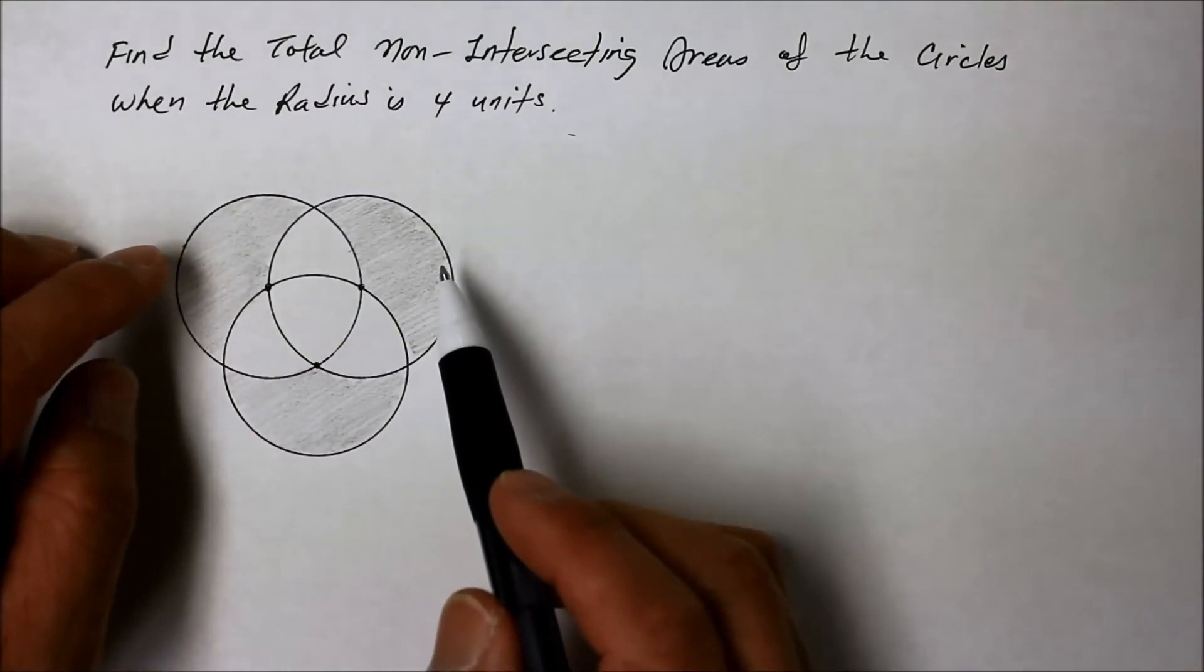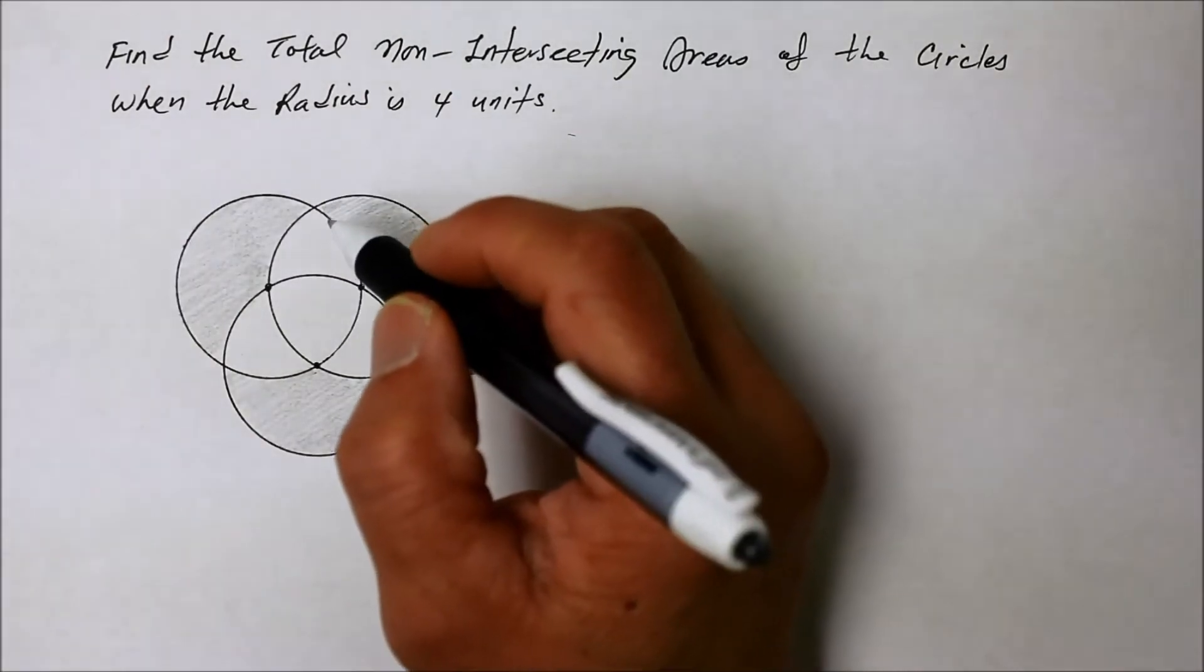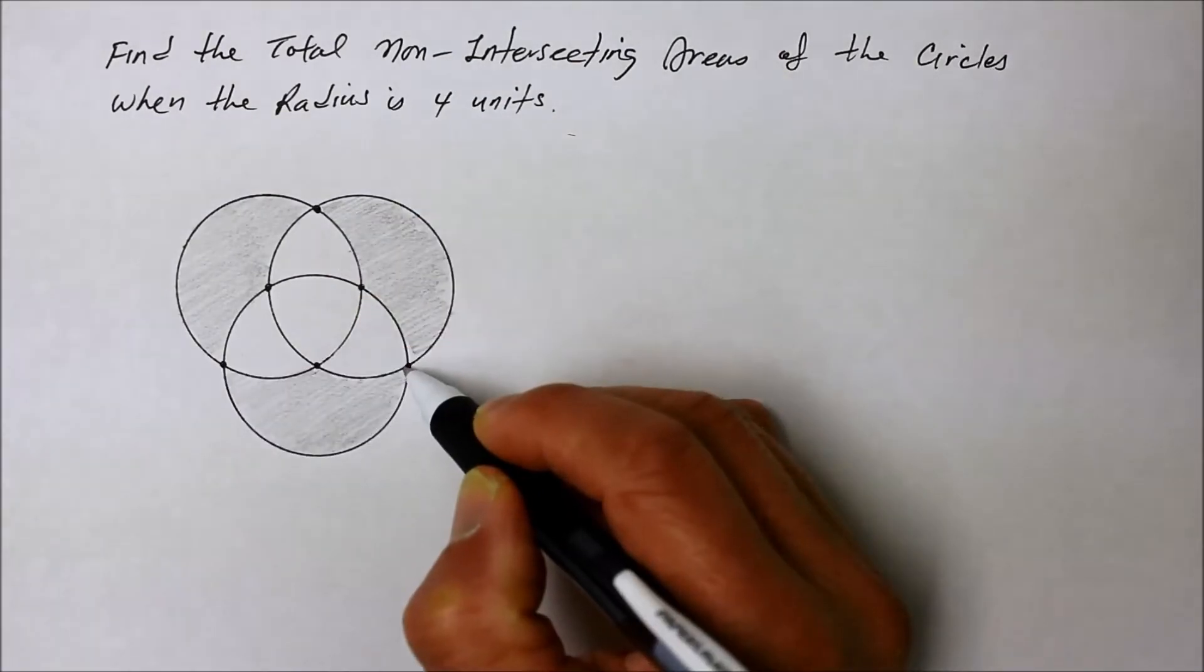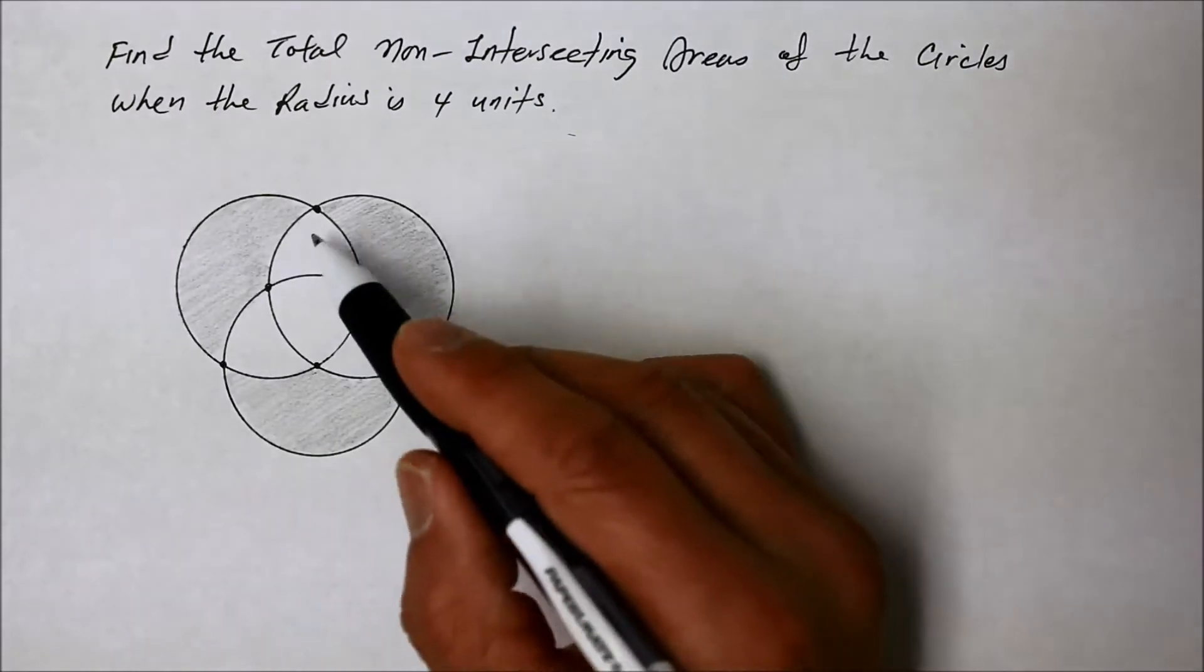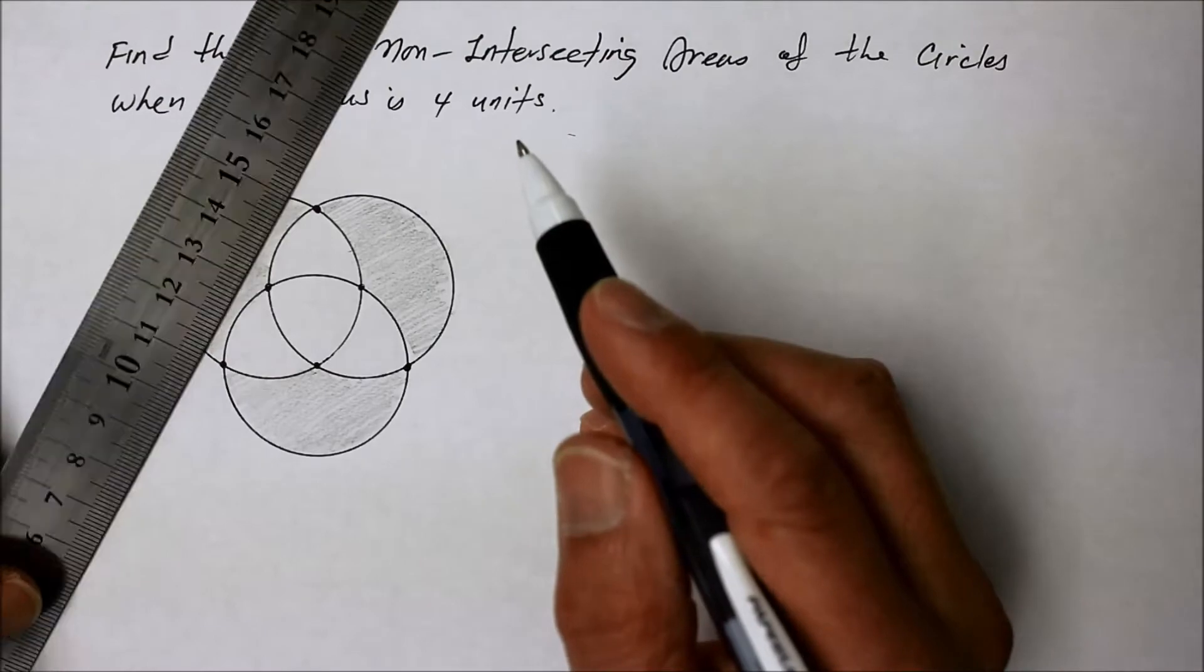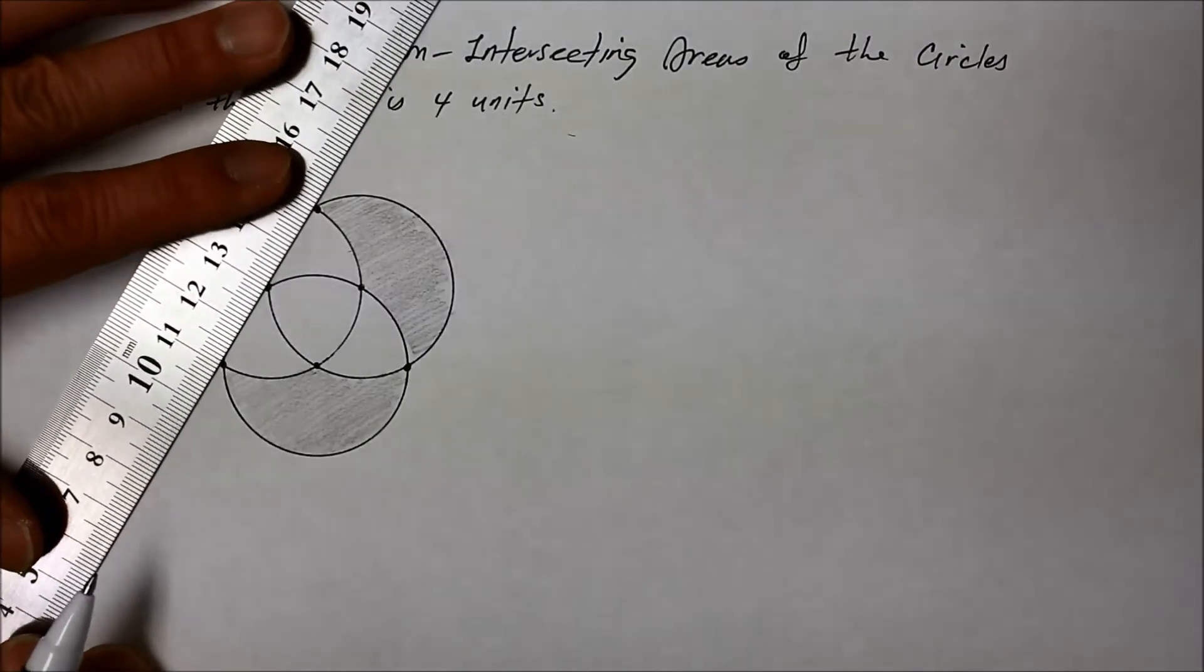what you end up is where the circumferences intersect right there, right there, and right there. If you were to draw a line using those as the vertices of a triangle, you end up with an equilateral triangle. Here, I'll show you. Look at this.